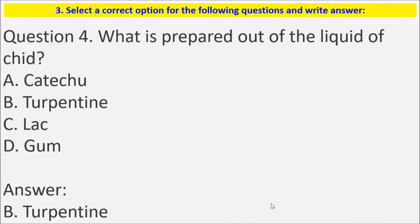Next question: What is prepared out of the liquid of the chit tree? The answer is turpentine is prepared out of the liquid of chit.